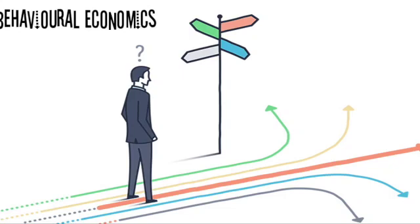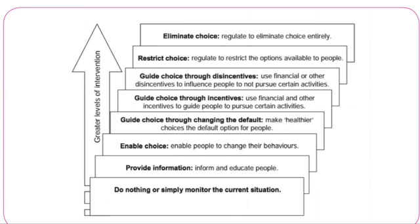This is another video on behavioral economics and nudge theory. When looking at nudge theory, it's important to consider the alternatives from the perspective of government setting policies. They can completely eliminate choice by banning or regulating it, or go to the other end of the spectrum and do nothing, leaving it to the free market. In between, you get methods like providing information, enabling choice, or guiding choice — and guiding choice by changing the default is where nudge theory sits. It's a subtle government intervention that directs people toward better decisions without forcing them.